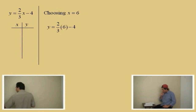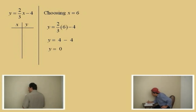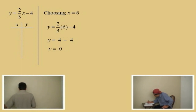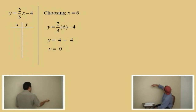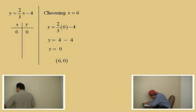So in our next step, that gives us y equals 4 subtract 4, which gives us zero. Y equals zero. Very good. And so, that is the ordered pair — we chose x equals 6, the y came out to be zero, so our ordered pair is 6 comma zero. Very nice. We'll go ahead and put that on our table.